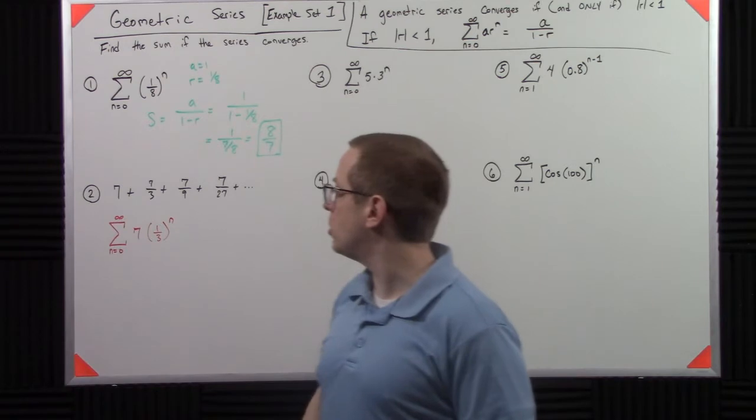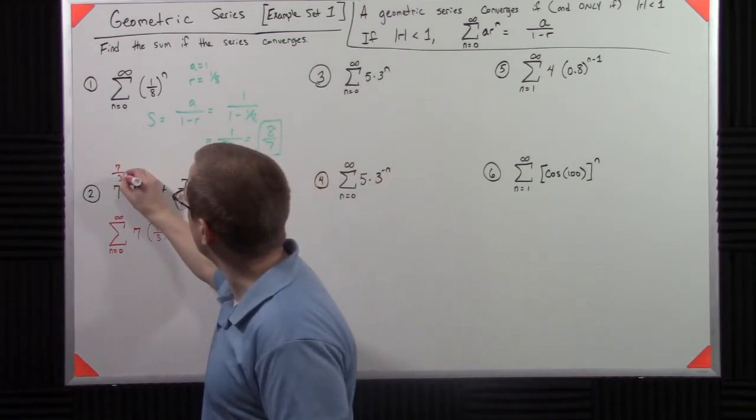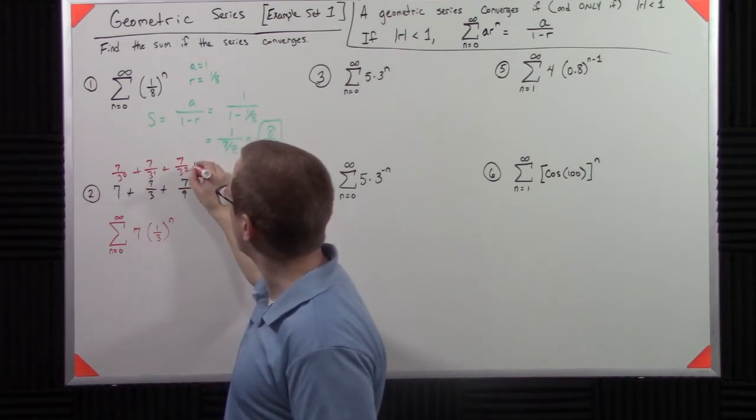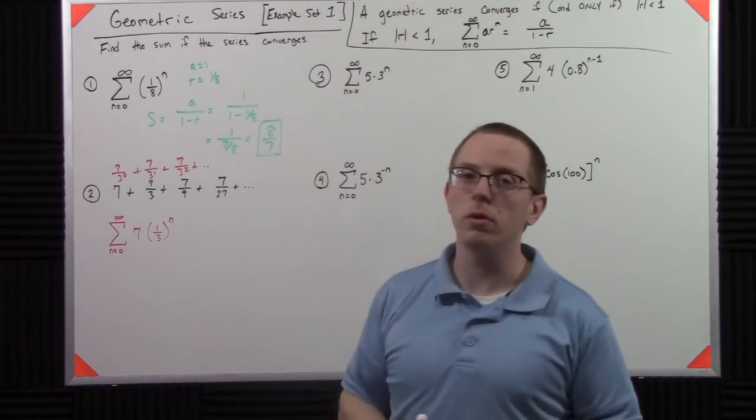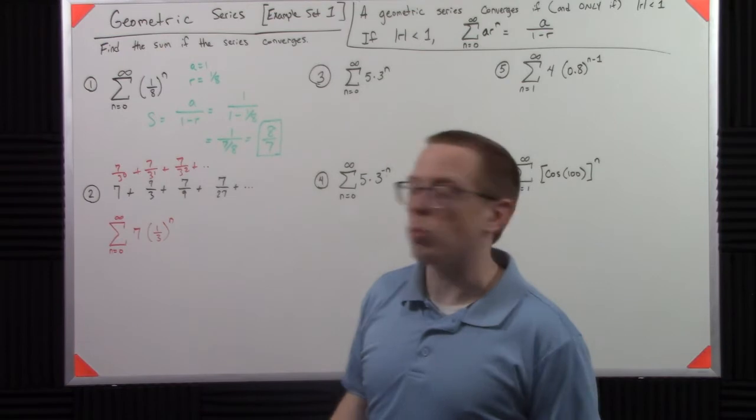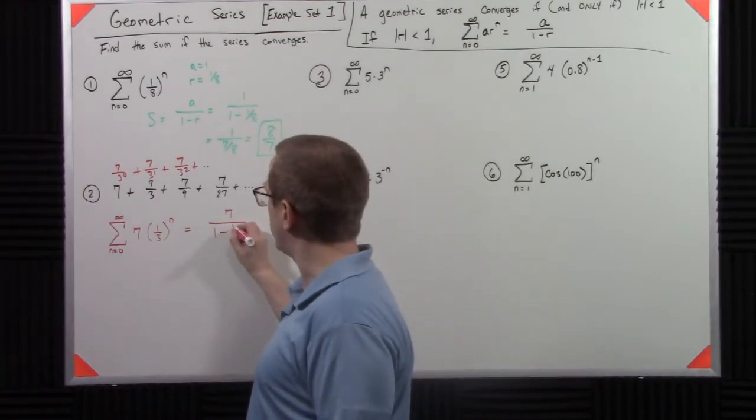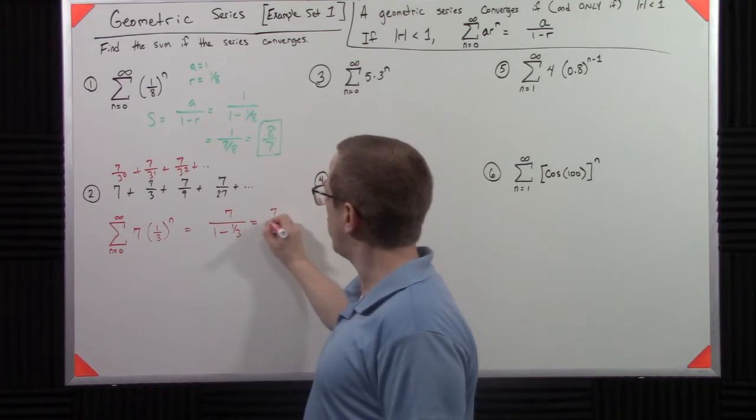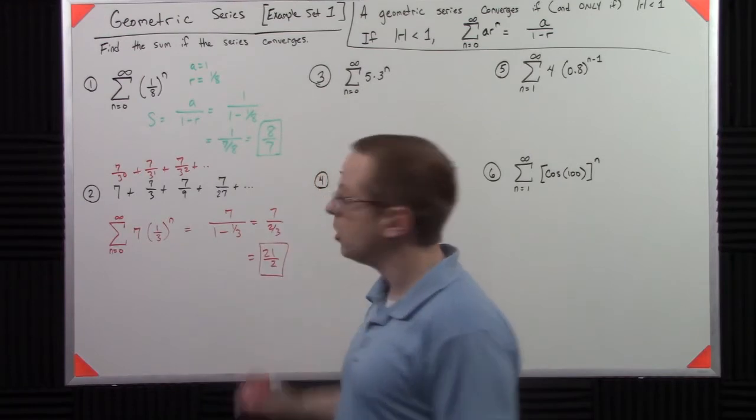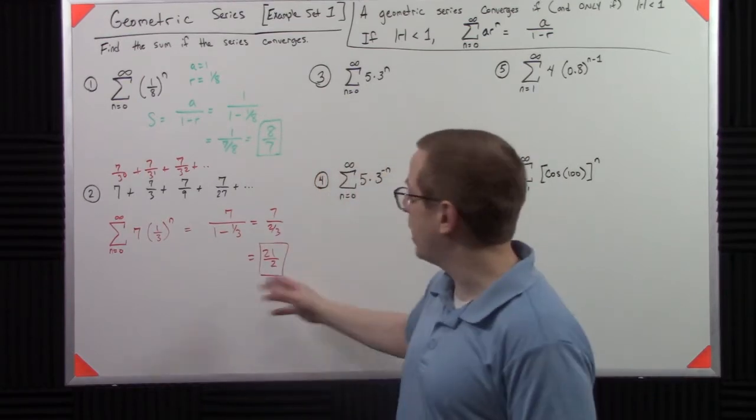So that's here. So you could write this as 7 times 3 to the 0 plus 7 over 3 to the 1st, 7 over 3 squared, and so on and so forth. So that's a little more straightforward. So then we have a is 7, and we have r is 1/3. So that's 7 over 1 minus 1/3, 7 over 2/3, 21/2. So it's simple and sums up to about 10.5.